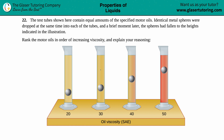Number 22. The test tubes shown here contain equal amounts of a specified motor oil. Identical metal spheres were dropped at the same time into each of these tubes and a brief moment later, the spheres had fallen to the heights indicated in this illustration. Rank the motor oils in order of increasing viscosity and explain your reasoning.